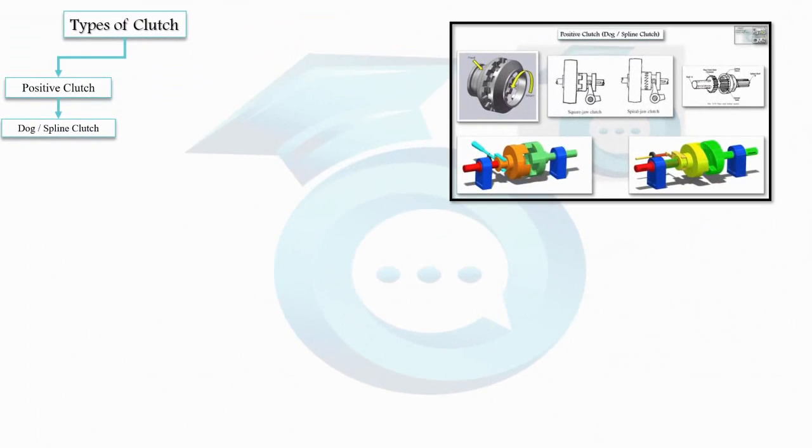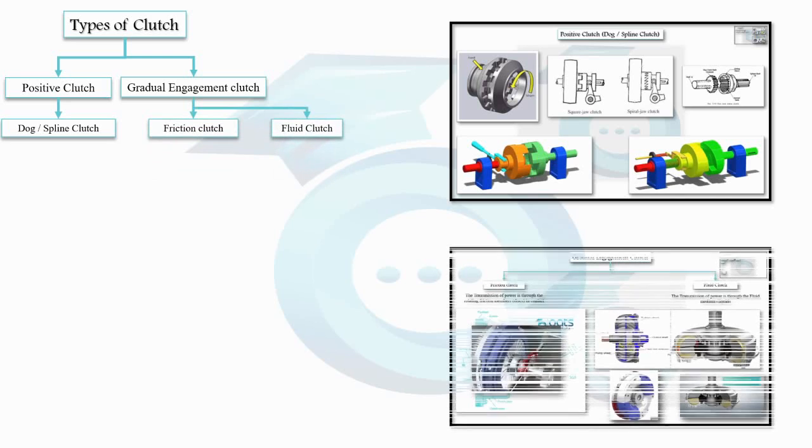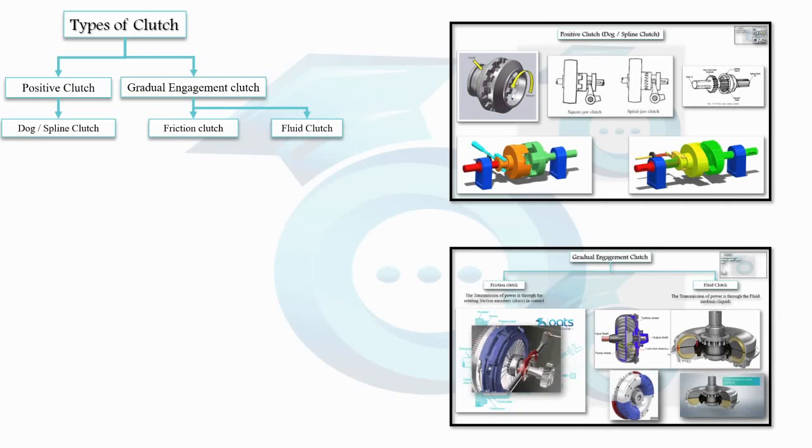On the other hand, we have the gradual engagement clutch. This type of clutch allows for a smooth and gradual connection or disconnection between the power source and the driving component. It operates with a controlled slip, enabling one shaft to rotate at a higher speed while the other remains stationary or rotates at a lower speed. The gradual engagement clutch can be further classified into two main categories: the friction clutch and the fluid clutch.